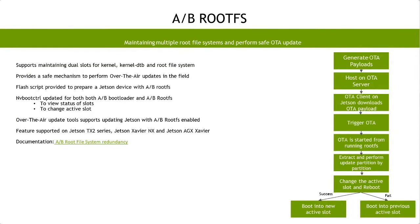The ability to maintain two redundant root file systems provides a safe way to perform over-the-air updates in the field, ensuring device availability across an OTA attempt. With A/B root filesystem redundancy, you maintain two root file systems — including the kernel and kernel DTB — simultaneously. While running on one slot, you can update the non-running slot. If the update goes bad, you always have one good slot to boot from, making it a very common and safe OTA technique.